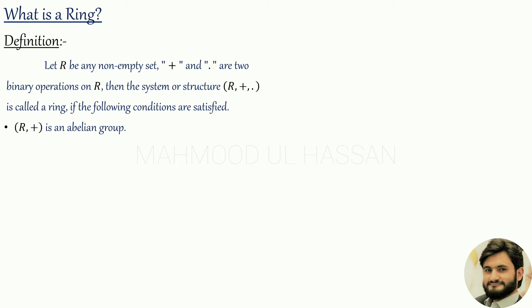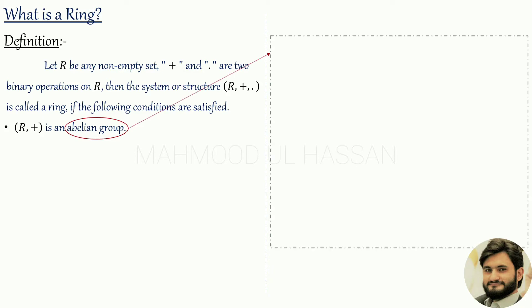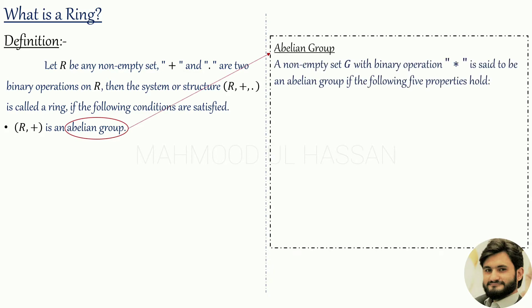Set R is an abelian group under addition. So what is an abelian group? We have to define it here. An abelian group is a non-empty set G with a binary operation (denoted steric), which may be multiplication or addition, and is said to be an abelian group if the following five properties hold.